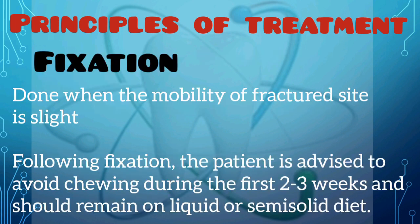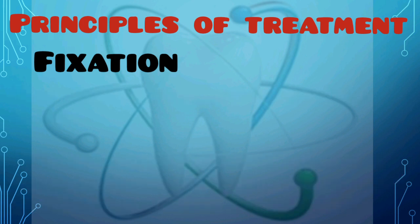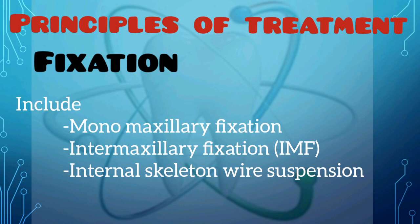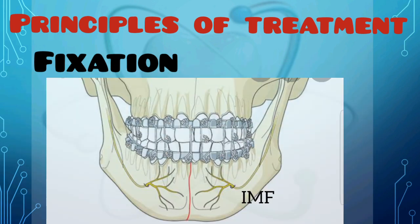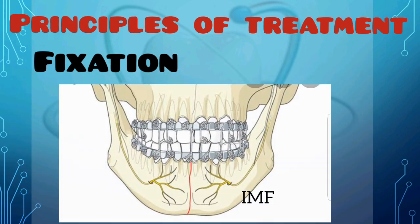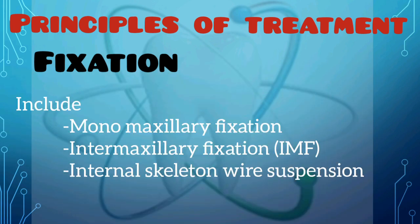After reduction, there is fixation. Fixation is done when the mobility at the fractured maxilla is only slight. Following fixation, the patient is advised to avoid chewing during the first 2–3 weeks and should remain on a liquid or semi-solid diet. The fixations include monomaxillary fixation, intermaxillary fixation, and internal skeletal wire suspension.